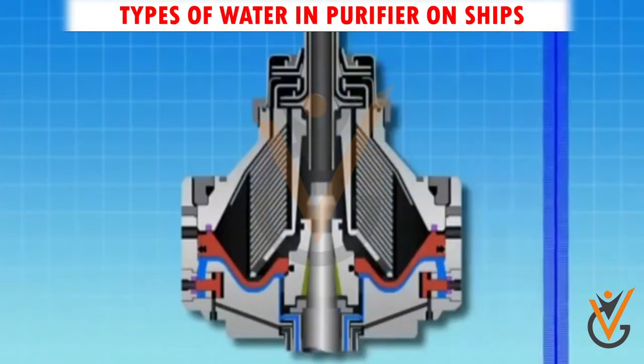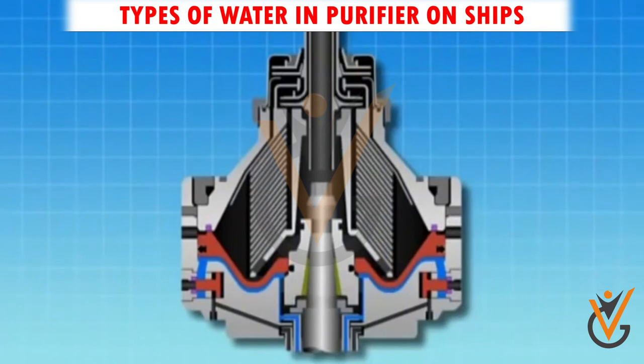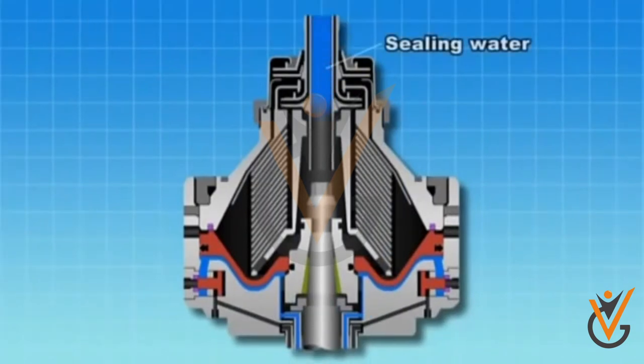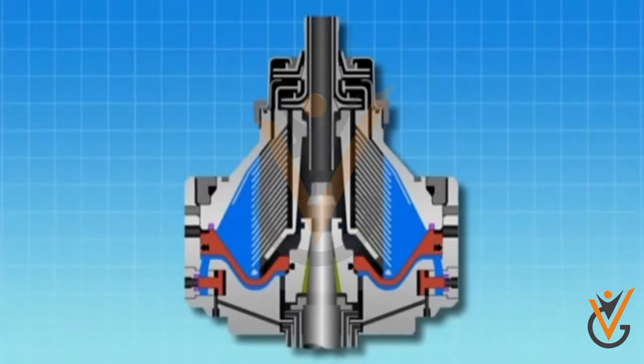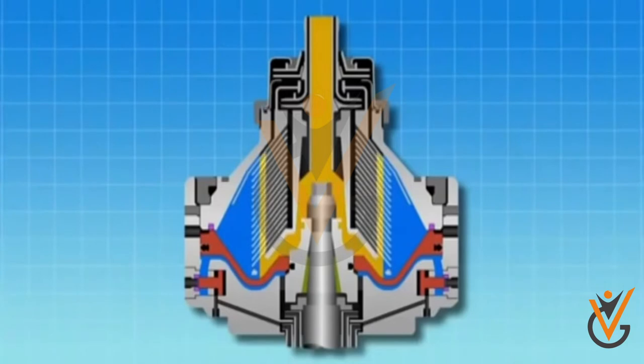Types of Water in Purifier on Ships. Sealing Water: Before proving the feed to the purifier, sealing water is provided so that the interface can be created between oil and water. After every desludging, sealing water is provided to the purifier.